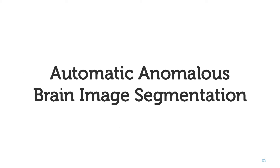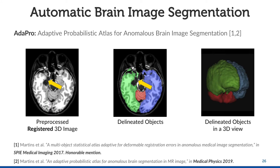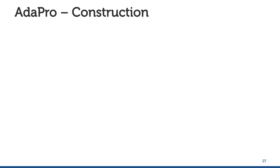Our first contribution was an automatic method for anomalous brain image segmentation. Our method is used during preprocessing and other steps from the general pipeline. The proposed method, called Adapro, is based on a probabilistic atlas. Adapro aims to adapt the shape constraints provided by the probabilistic atlas to ignore anomalies during segmentation, such as this black region indicated by the yellow arrow. During construction, Adapro combines shape and texture constraints for segmentation.